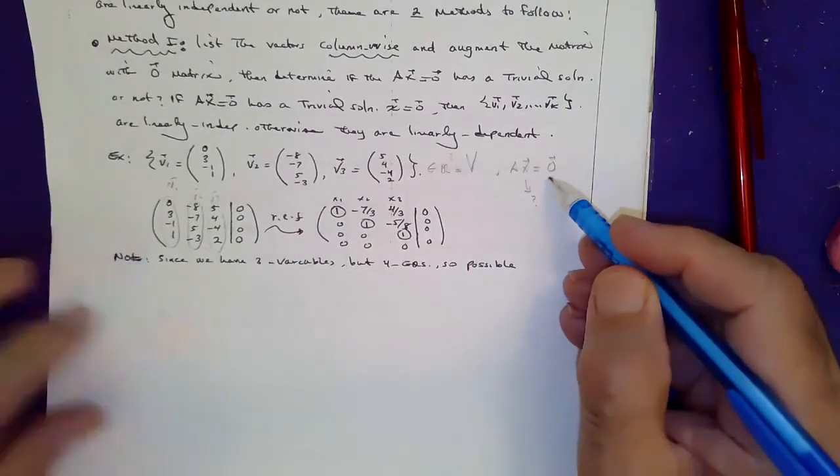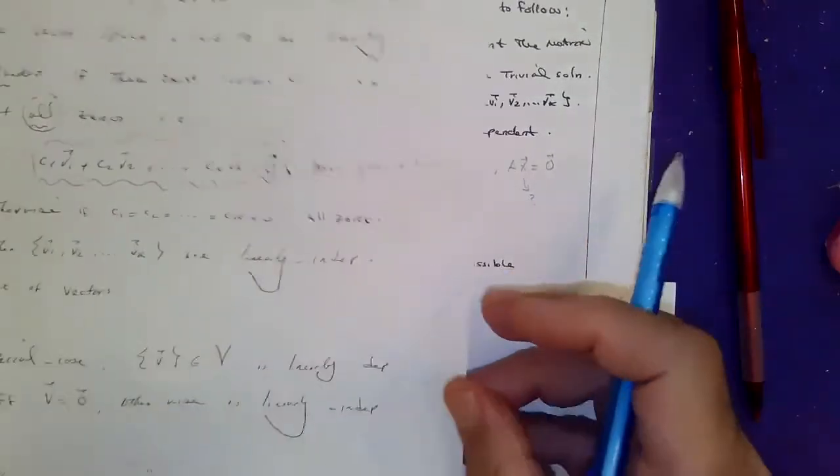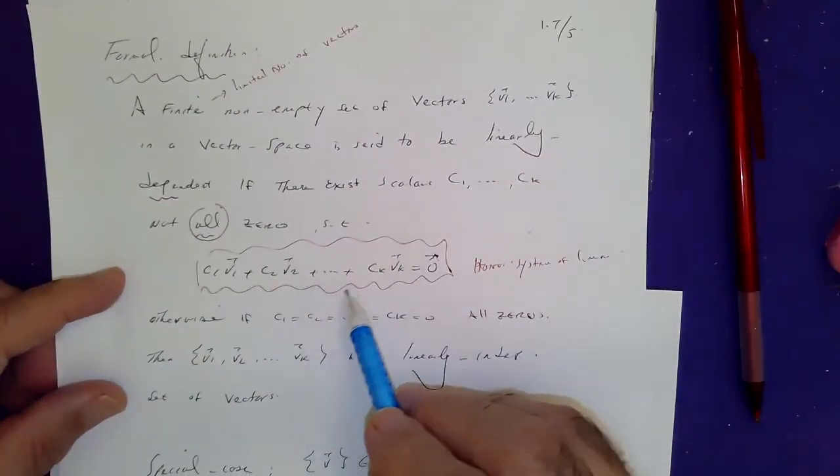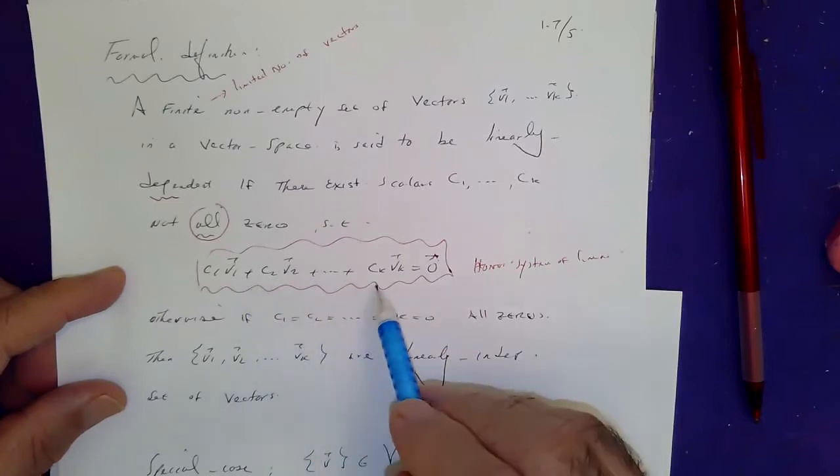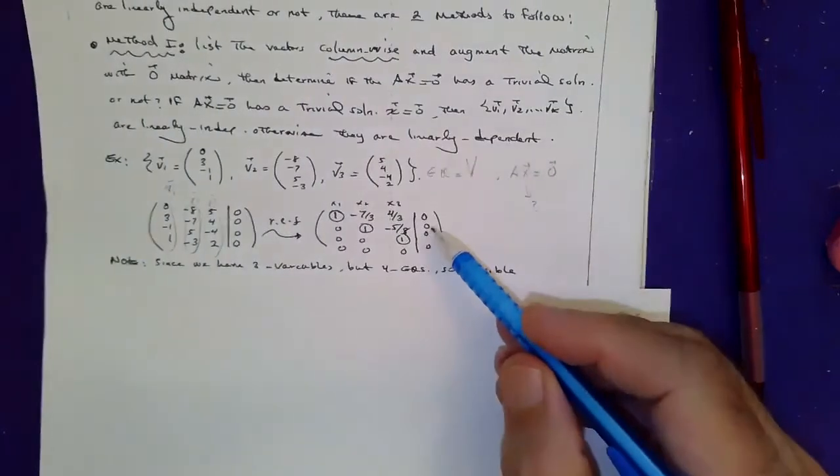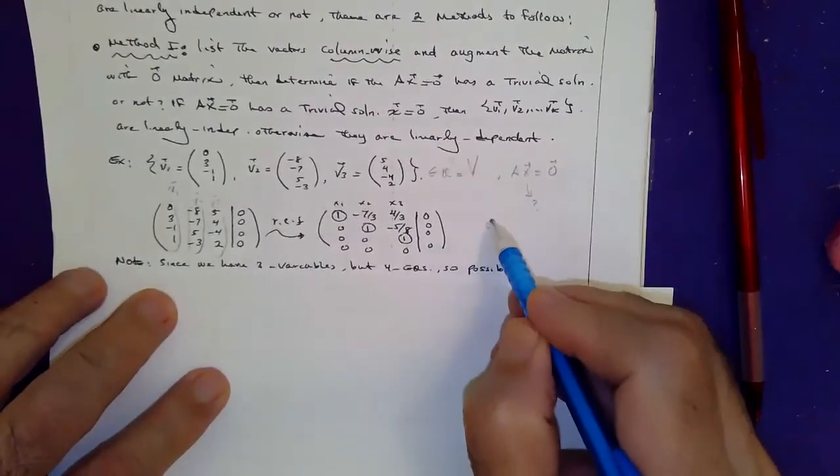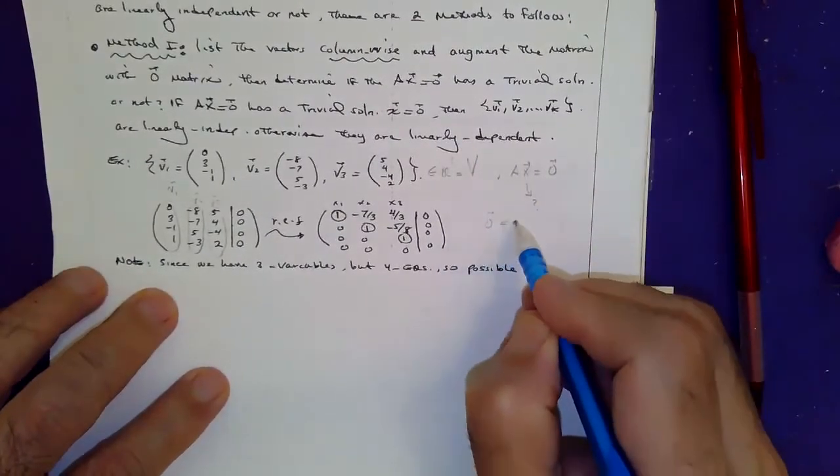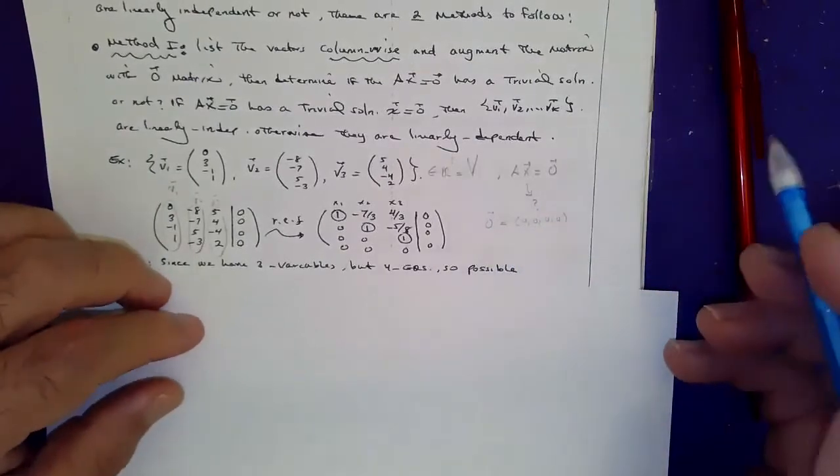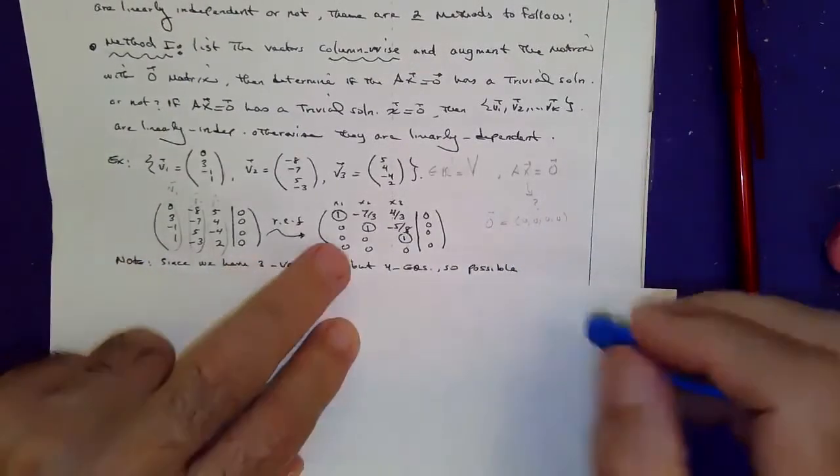And set it equal to zero. Because the definition of linear dependency, independency is this linear combination of vectors V1 through Vk has to be equal to zero vector. In this case, the zero vector happens to be zero, zero, zero in R... excuse me, guys.